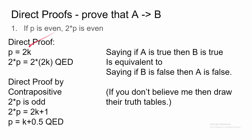So P equals 2K — the direct proof would be this. If P is even, then P can be written as two times an integer K, where K is any integer. Then 2 times P would be equal to 2 times 2K. So therefore, 2 times P must also be even. Direct proof by contrapositive says we're gonna assume that B is false, and find that A is also false, because if B is false, then A is false — which is the same as saying if A is true, then B is true.